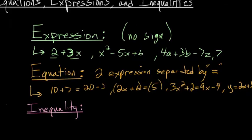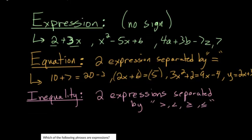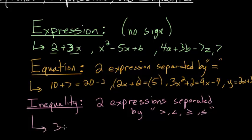The last one is the inequality. This is essentially two expressions separated by an inequality sign. With inequalities, there are several different signs you can use: greater than, less than, greater than or equal to, or less than or equal to. For example, 3 plus 5 is greater than 2. This is a true inequality, since you would have 8 on one side, which is always bigger than 2.